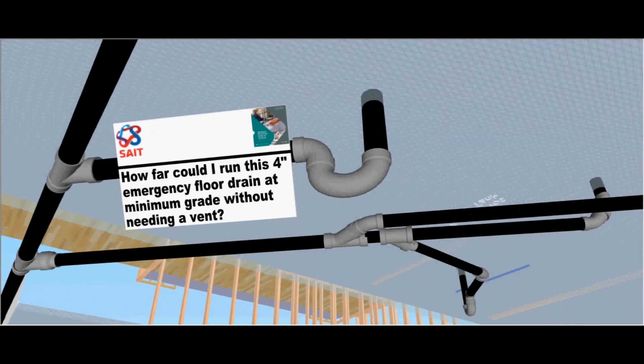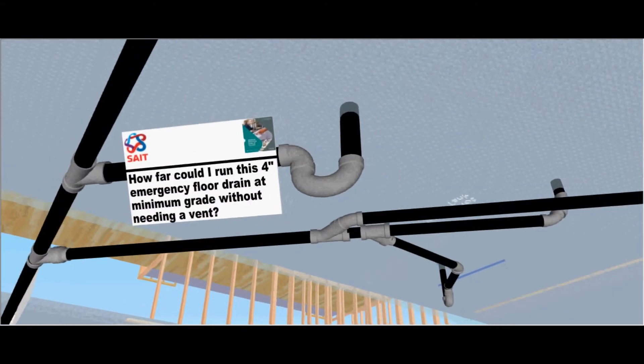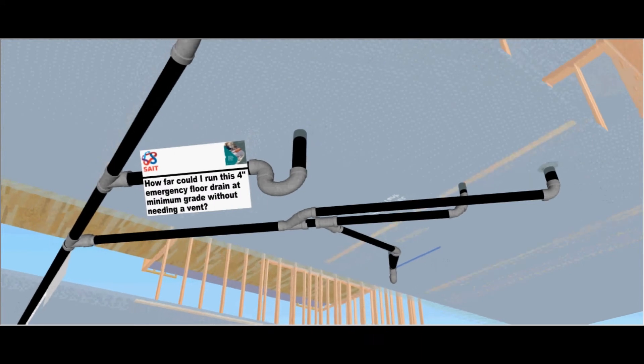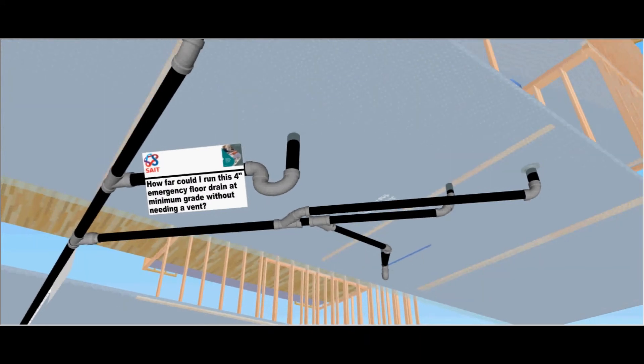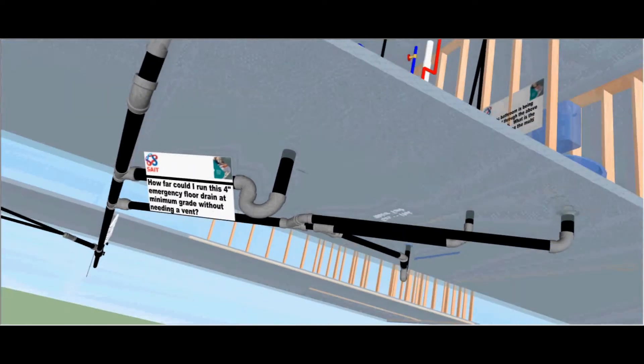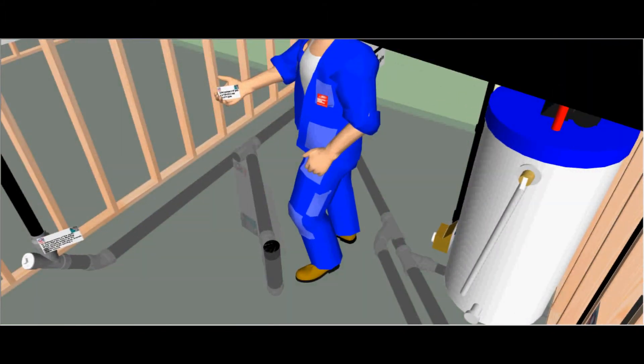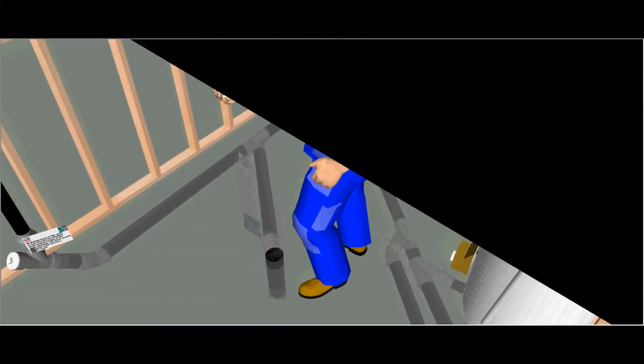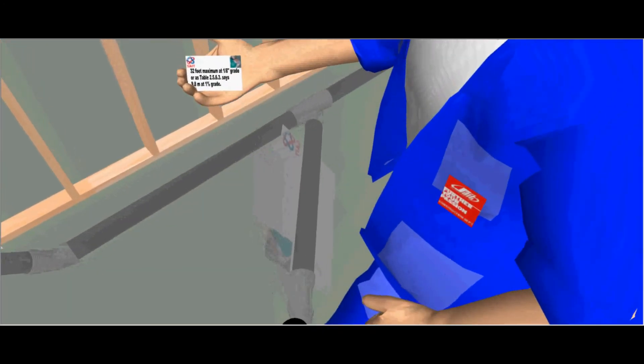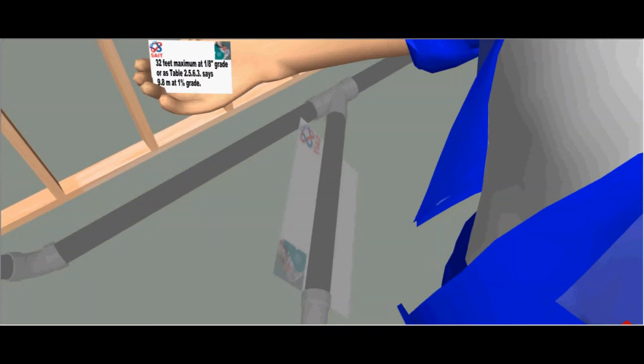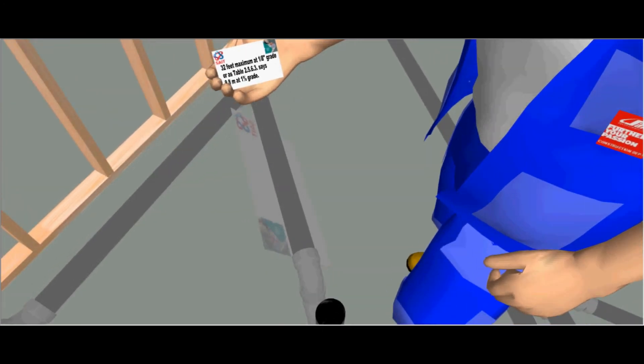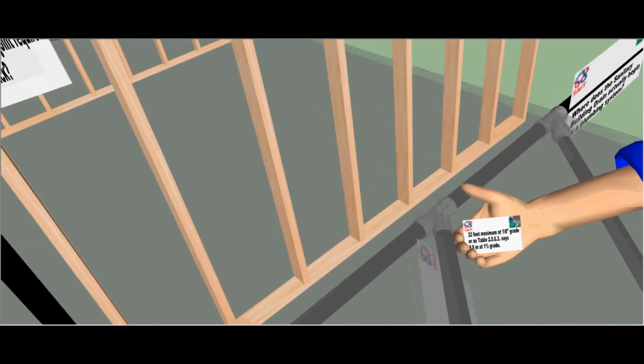So let's take a look. How far can I run this 4 inch emergency floor drain at minimum grade without needing a vent? Well, let's take a look. You could run this 4 inch floor drain at least 32 foot maximum at eighth of an inch per grade as it says on table 2563 or 9.8 meters at 1% grade.